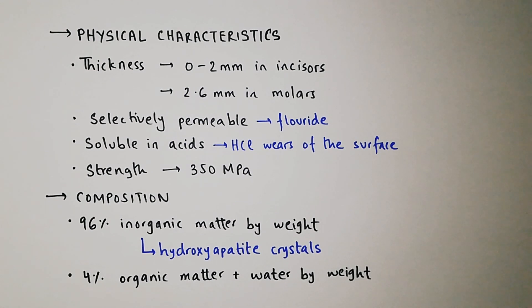Enamel is selectively permeable, which allows for the inflow of nutrients, especially fluoride, which is essential for the maintenance of the structure of enamel. Enamel is soluble in acids like hydrochloric acid, which wears off the inner surface of the teeth. Its strength is 350 MPa.